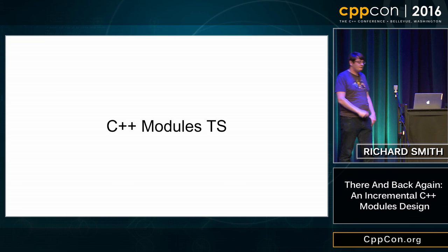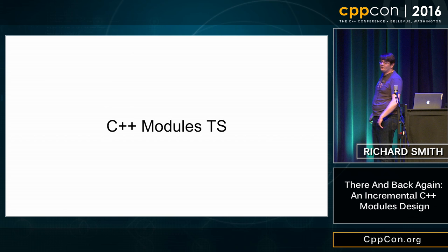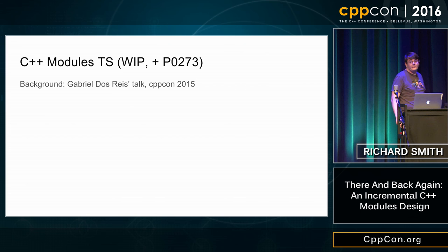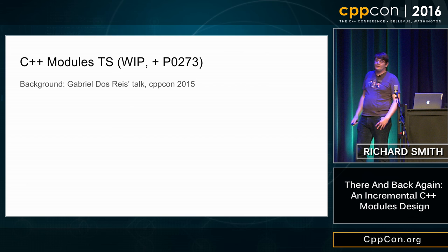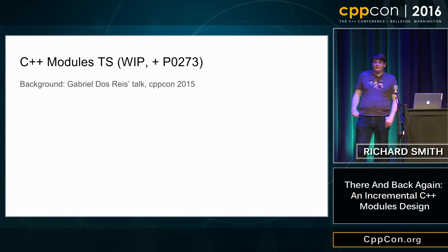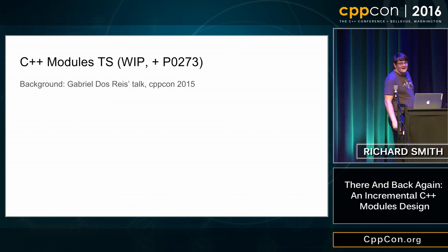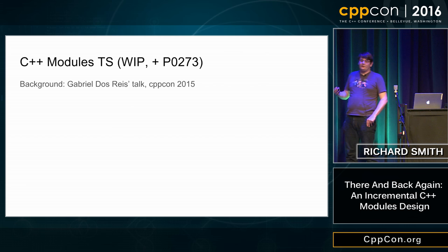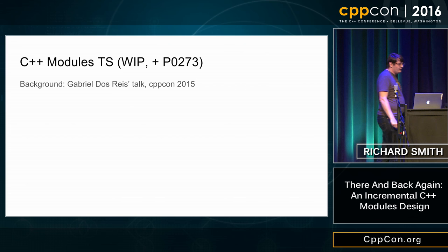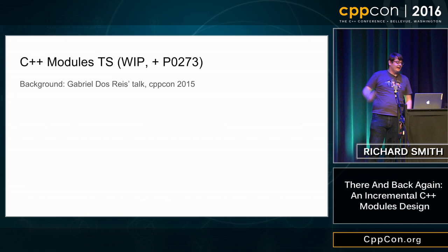Fortunately there is another approach: the C++ modules TS. The modules TS is a work-in-progress technical specification for C++ that does aim to solve those problems. I'm going to use the syntax of the modules TS plus some syntactic tweaks from paper P0273, the authors of which I think are all in this room. I'm only using tweaks that have been through the evolution working group and largely approved in principle. If you want to know more about the modules TS, see Gabby's talk from last year's CppCon, as well as Gabby's talk tomorrow.